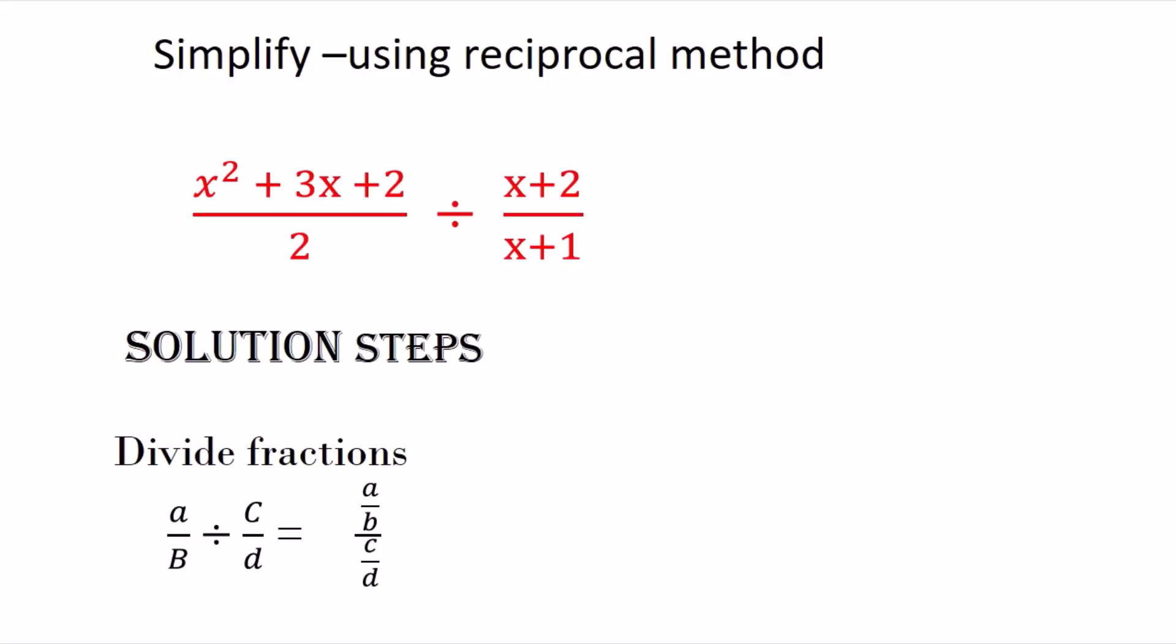The solution step we're going to take here: the first thing we're going to do is change the sign from division to multiplication on the right side. So the one on the top, the x plus 2, will come to the bottom, and x plus 1 will go to the top. The sign here is going to change to times or multiplication.